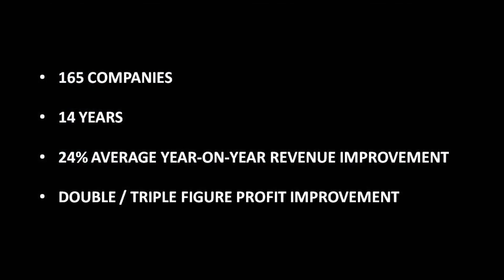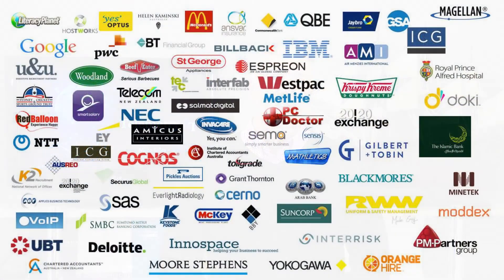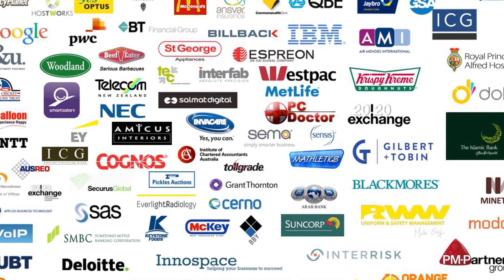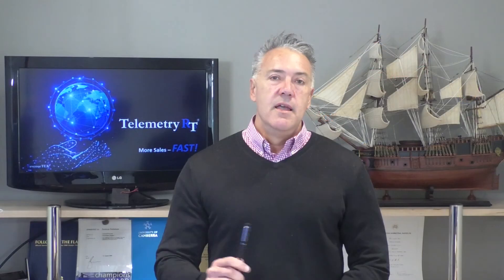Thus far, 165 companies have employed the revenue tech system. On average, they improve their sales output year on year by 24% — which sounds like a lot, and it is. But just three 2% improvements in the pipeline process will get you that result, if you know where and how to make them. In nearly every case, those clients at least doubled their profits — many turned losses into profits. There's no reason why it shouldn't be able to do the same thing for your company. And that, ladies and gentlemen, is the power of Telemetry RT3 coupled with marginal gain theory — to massively simplify the extraordinary complexity bordering on chaos that today's sales leaders face every day they go to work.